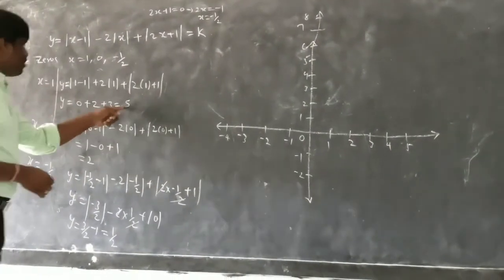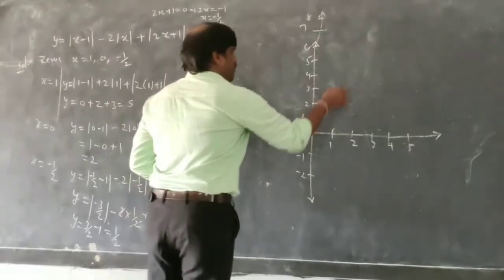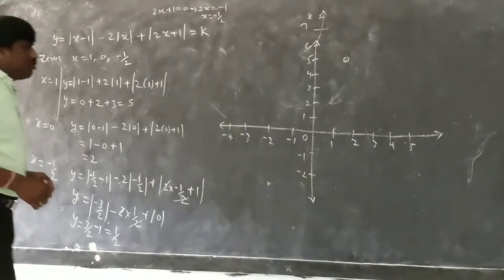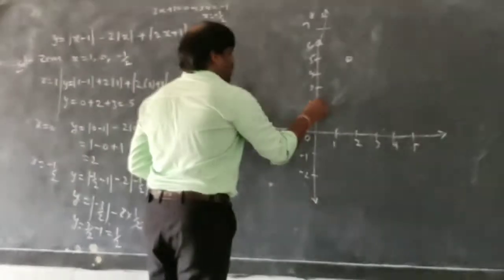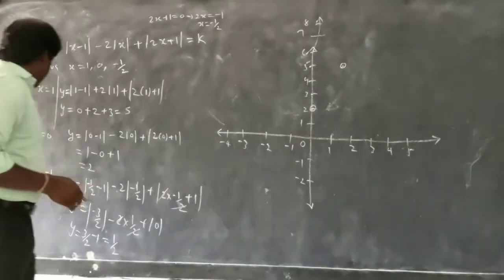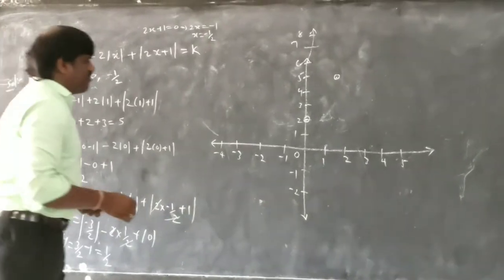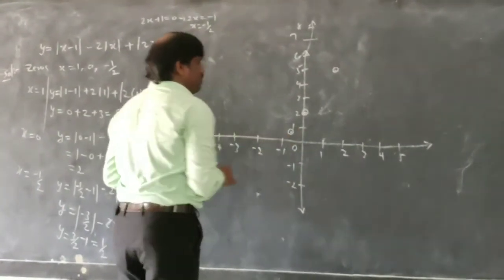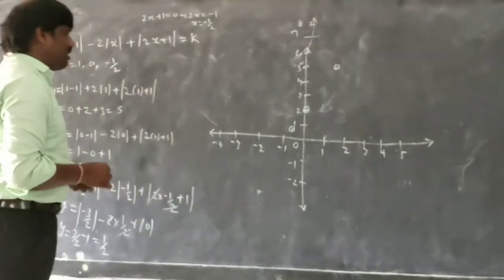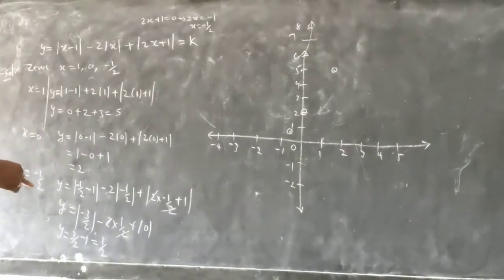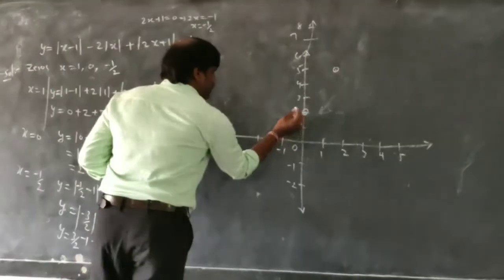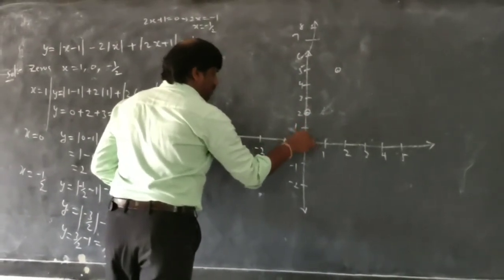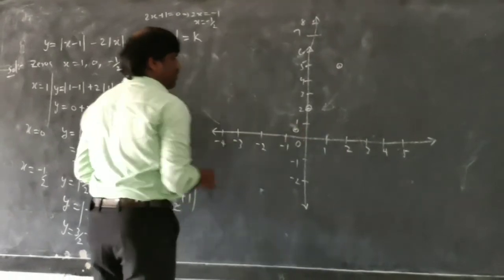For x equal to 1, y is 5. For x equal to 0, y is 2. For x equal to minus 1/2, y is plus 1/2. So minus 1/2 is between 0 and minus 1 on the x-axis, and the corresponding y value is plus 1/2.